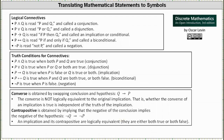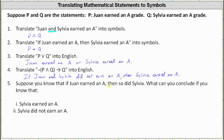Now looking at number five, suppose we know that if Juan earned an A then so did Sylvia, which is equivalent to if P then Q. If we know if P then Q is true, for the first part we are given that Sylvia earned an A, which is statement Q. The question becomes: if we know Q is true, do we know Juan also earned an A? That would require if Q then P, which is the converse of if P then Q. The converse can be true or false when the implication is true, so we can conclude nothing.